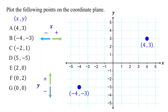Now, please pause the video and try to plot point C. The x-coordinate is negative 2, so start at the origin and move to the left 2 units. The y-coordinate is positive 1, so move up 1 unit. Finally, mark the point where you end up. This is the point (-2, 1).